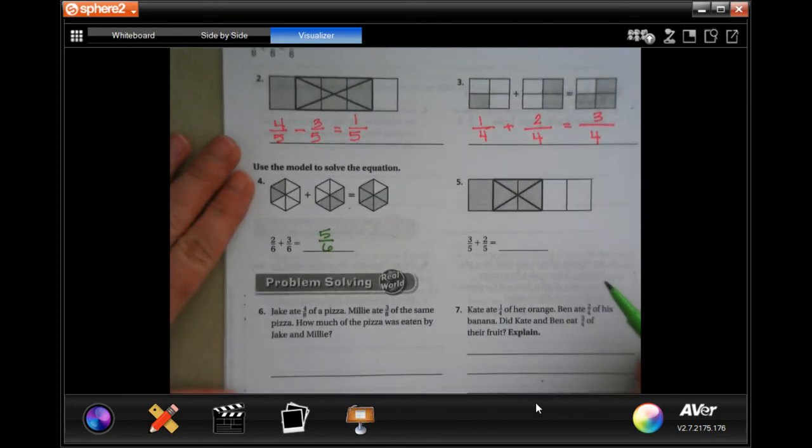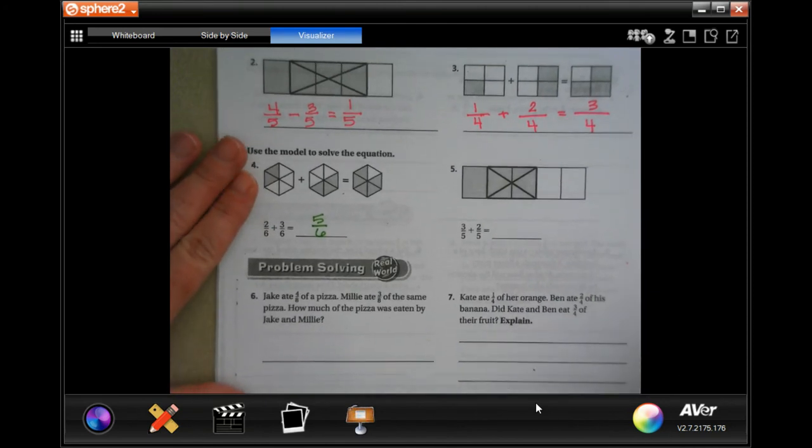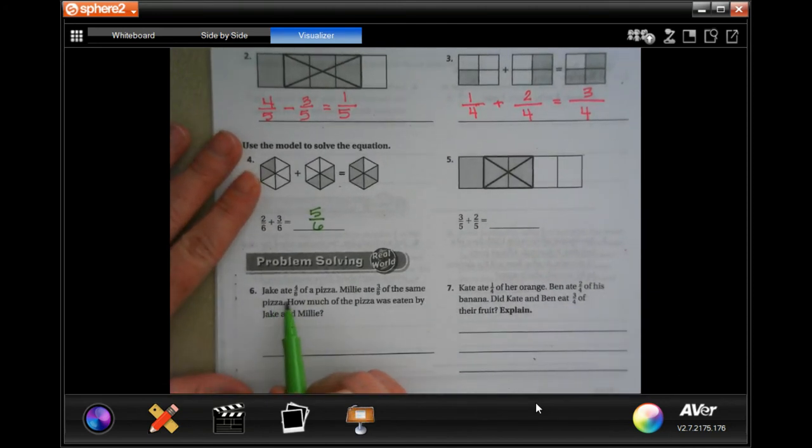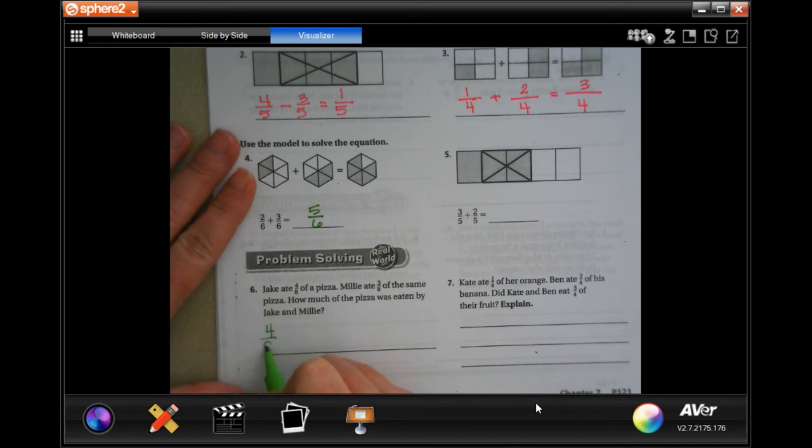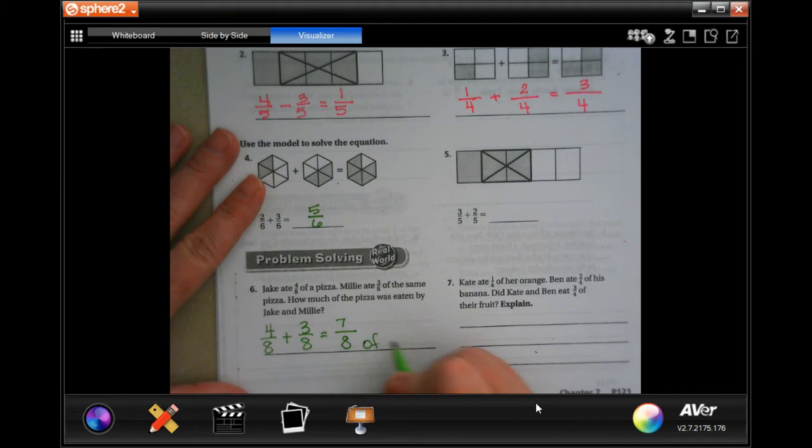And we are gonna go down and do number six. Jake ate four eighths of a pizza, Millie ate three eighths of the same pizza. How much of the pizza was eaten by Jake and Millie? Well, four eighths plus three eighths, the denominator stays the same and then four plus three is seven eighths of the pizza.